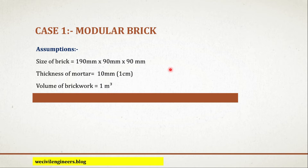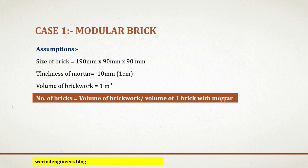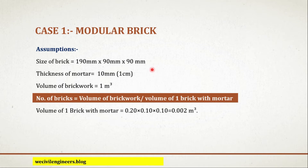To calculate the number of bricks, you need to remember a simple formula: number of bricks equals volume of brick work divided by volume of 1 brick with mortar. Volume of 1 brick with mortar is also known as nominal size, and the nominal size of an Indian brick is 200 mm by 100 mm by 100 mm. If you multiply these values, you get 0.002 cubic meter. Note that the value is in meters, not in mm.